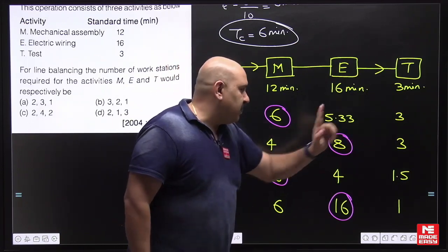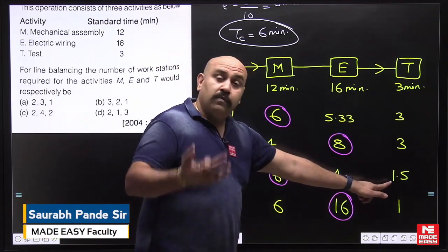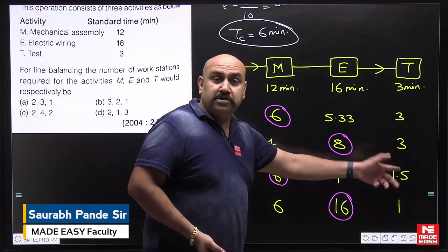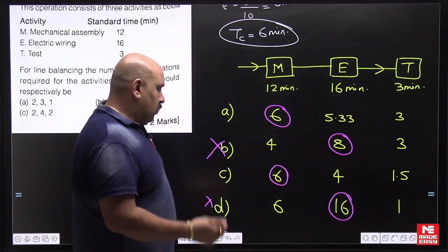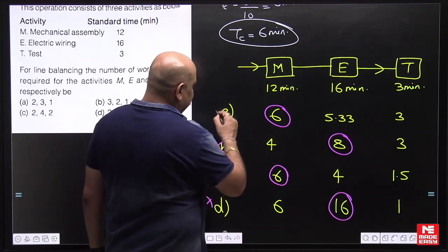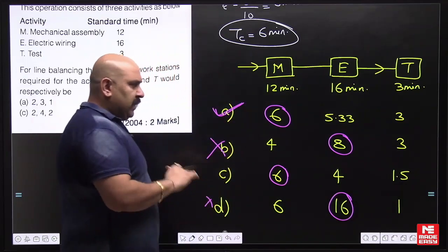Here the idle time is 2 minutes. For testing, 25% only utilization, 75% time idle. So out of these two, the best one will be option A where the line is more balanced.